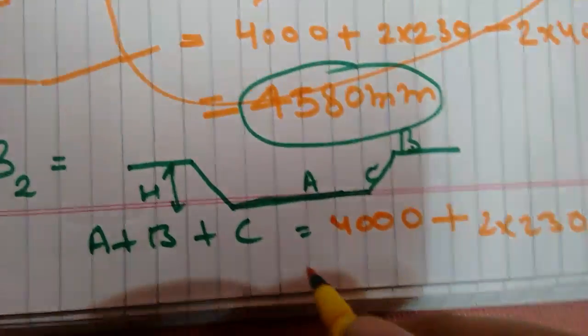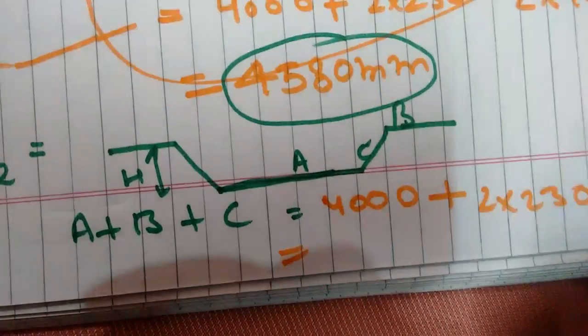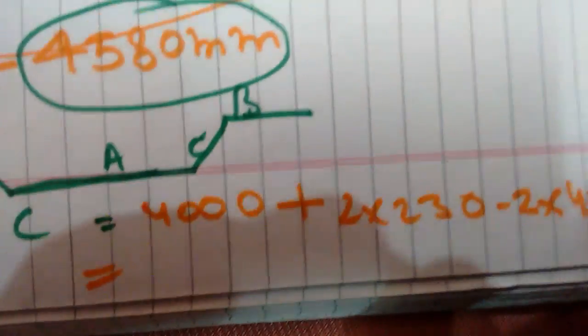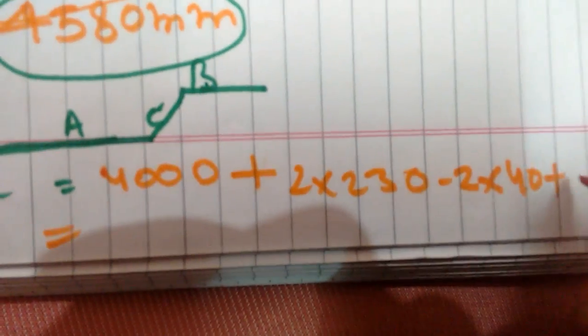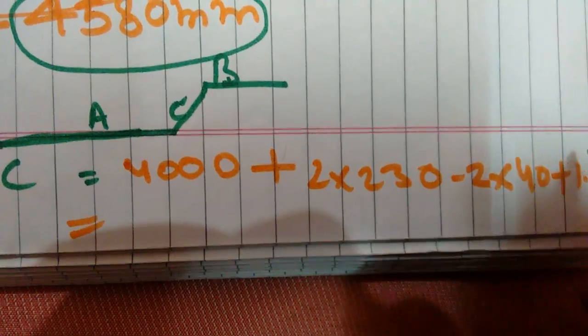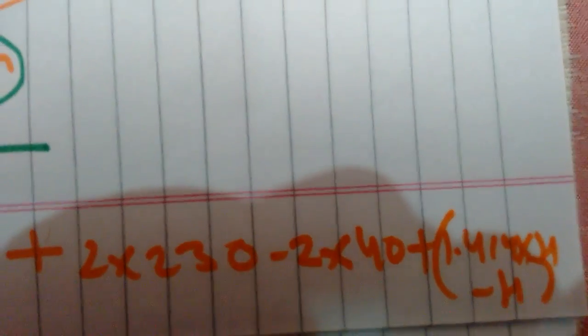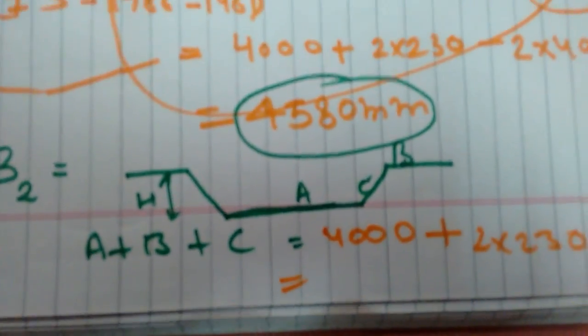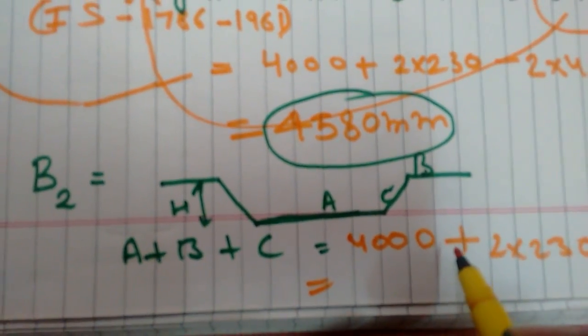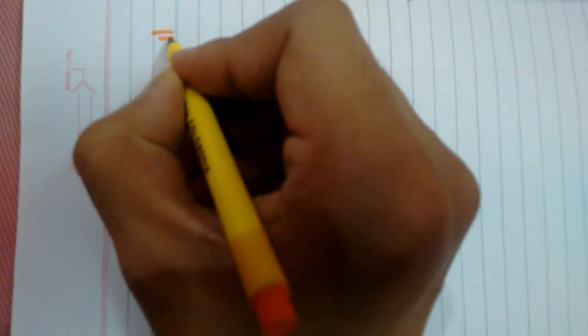That will give you plus 1.414 times H minus H. You have to include here also 1.414 times H minus H. Now you will move on to the next page that will give a value of...